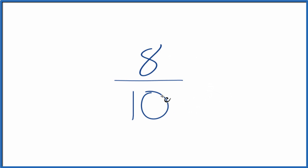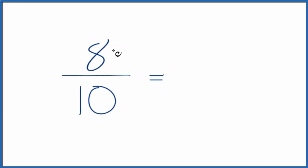So 8 tenths, we could reduce this or simplify it because they're both even numbers. Divide 8 by 2, you get 4. Divide 10 by 2, you get 5. And 4 fifths, that's an equivalent fraction for 8 tenths.